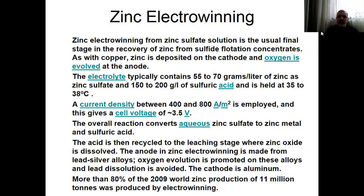A current density between 400 and 800 A/m² is employed, and this gives a cell voltage of 3.5 volts. Normally it is almost impossible to run this reaction without supplying voltage, and with the help of this voltage the non-spontaneous reaction becomes spontaneous — we need to pay the price. The ticket here is 3.5 volts. The overall reaction converts zinc sulfate to zinc metal and sulfuric acid, because due to the oxidation of water we get oxygen gas and H⁺ ions, which react further with sulfate ions to form sulfuric acid. The concentration of sulfuric acid increases day by day.